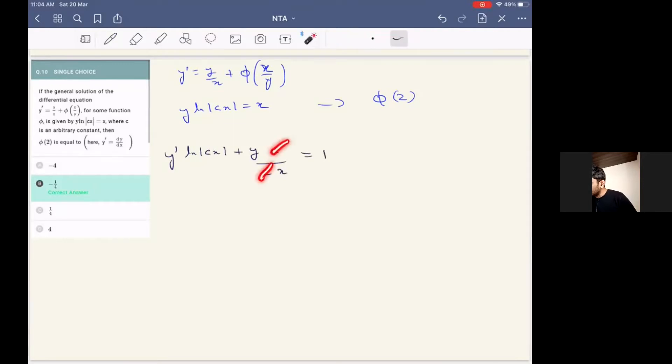Here we can cancel out c and c, and after doing that we are going to get y dash will be equal to one minus y by x divided by ln mod cx. Now from this original equation if we simplify, we can say that ln mod cx will be x by y.